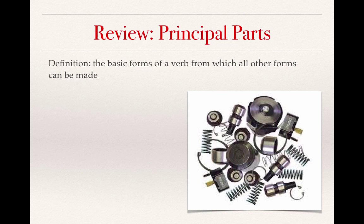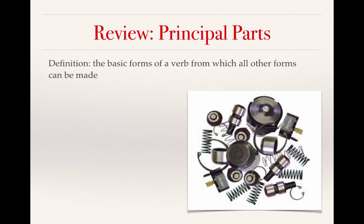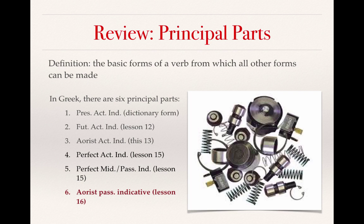As we have done for the last several lectures, I want to start with a review of the principal parts. Remember that principal parts are those basic forms of a verb from which all other forms can be made. In this lesson, we will be learning about the aorist passive indicative, which is the sixth principal part. It is the basis of the aorist passive and the future passive forms, which means we are finally at the last of our principal parts.